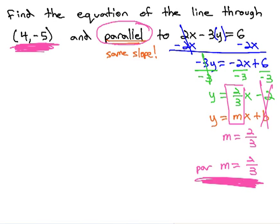In order to get the equation that goes through (4, negative 5) and has a slope of 2 thirds, we must use the point slope formula: y minus y1 equals m times x minus x1. Plugging in what we know, we get y minus y1, which is negative 5. Minus negative 5 is the same as adding 5.